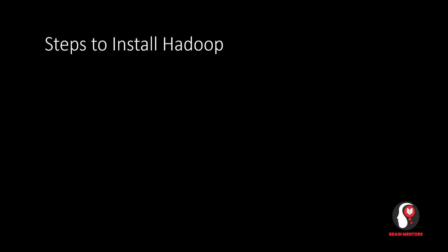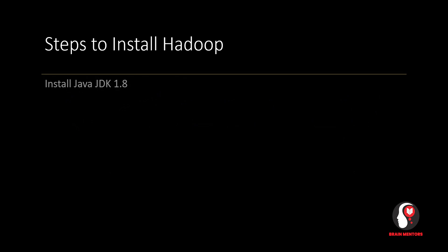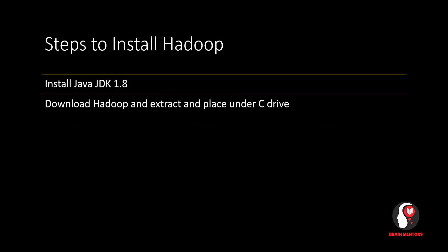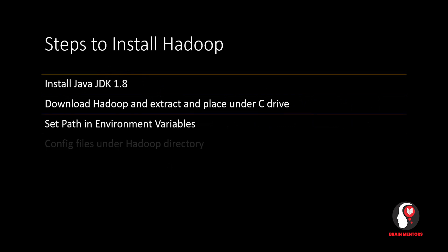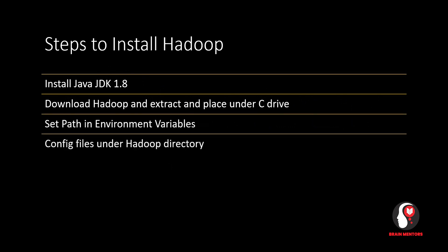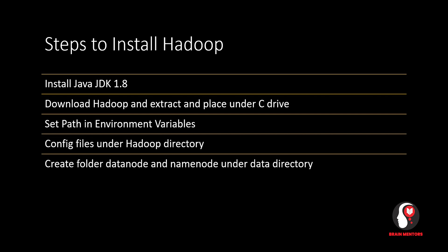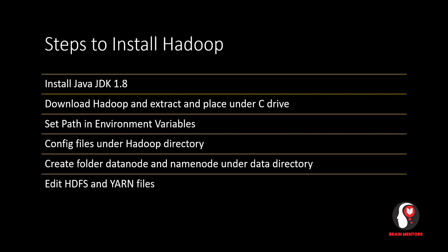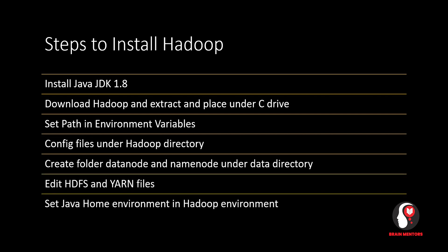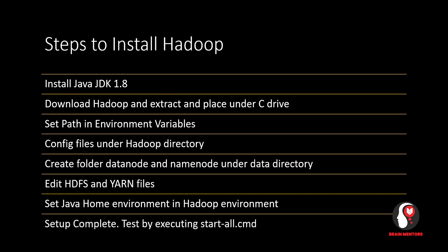These are the few steps you have to remember while installing Hadoop: install Java, download Hadoop and extract under C drive, set path in environment variable, config few files, create folder data node and name node, edit HDFS and yarn, set Java home environment in Hadoop — and then the setup is complete. You can test by executing start-all.